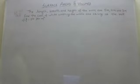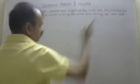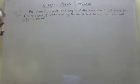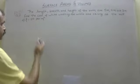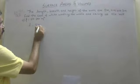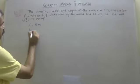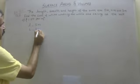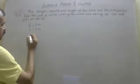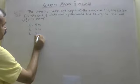What do we need to do in this room? First, we will write the given values. L is equal to 5m. Breadth: B is equal to 4m. And height: H is equal to 3m.